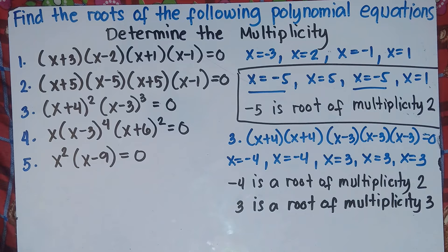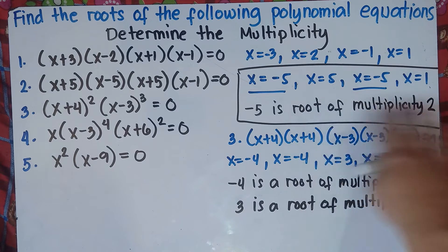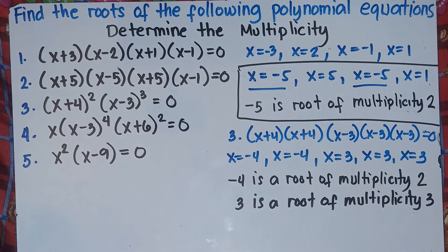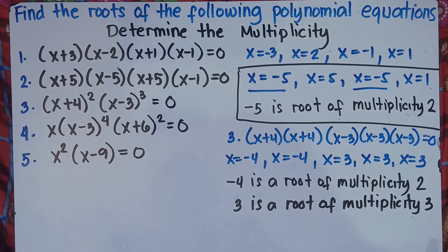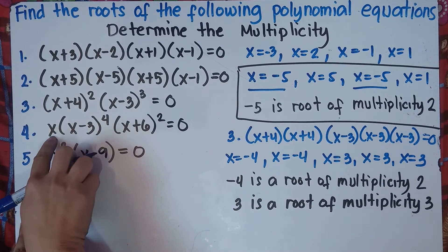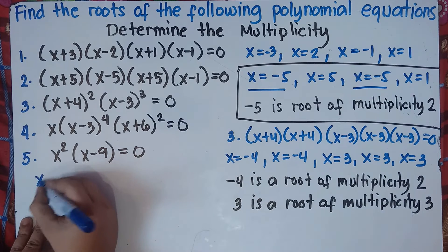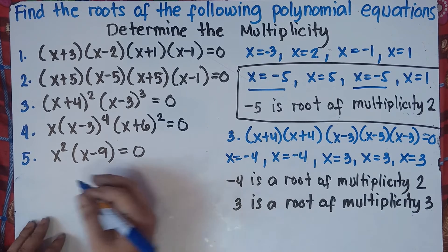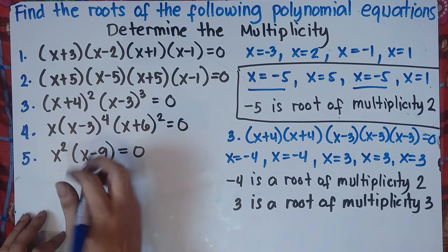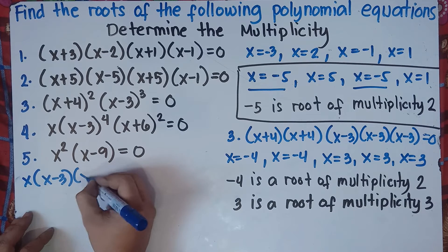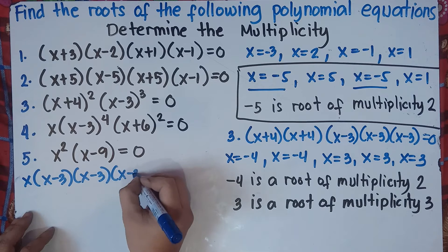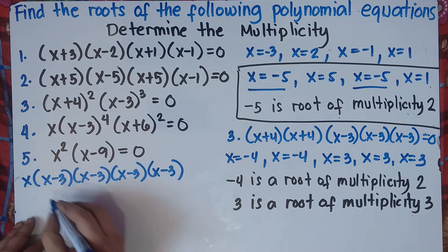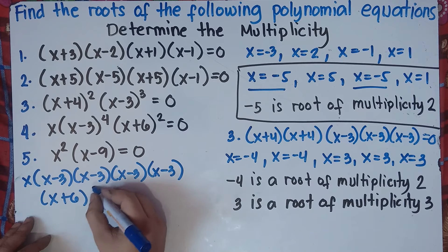For number 4, pause the video. We have x times (x minus 3) to the fourth power times (x plus 6) squared. Expanding: x equals 0 from the x factor. Then x minus 3 appears 4 times: x minus 3, x minus 3, x minus 3, x minus 3. And (x plus 6) squared gives x plus 6 twice.